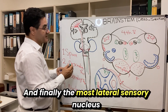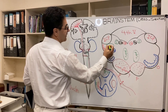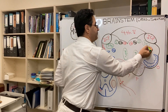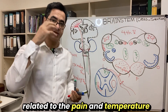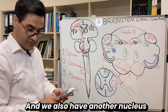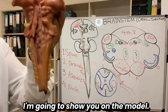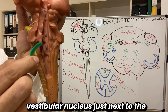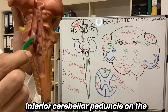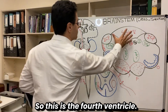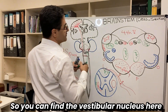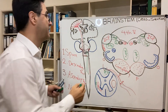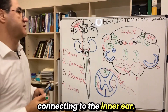The most lateral sensory nucleus is the spinal trigeminal nucleus — cranial nerve 5 — carrying sensory information related to pain and temperature of the face and head. We also have another nucleus: the vestibular nucleus, which is diamond-shaped. You can see its position just next to the inferior cerebellar peduncle on the lateral side of the fourth ventricle. The vestibular nucleus is part of cranial nerve 8, related to balance and connecting to the inner ear.